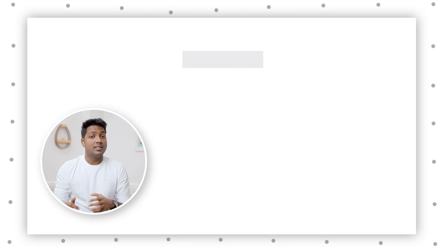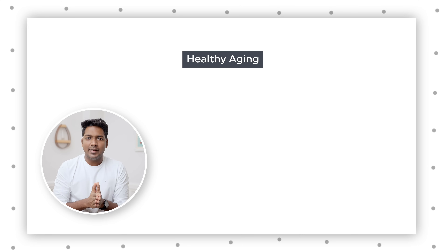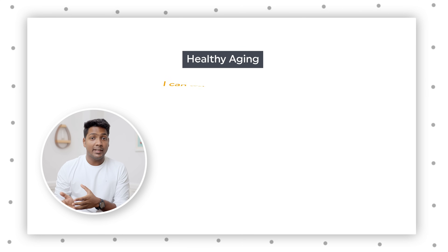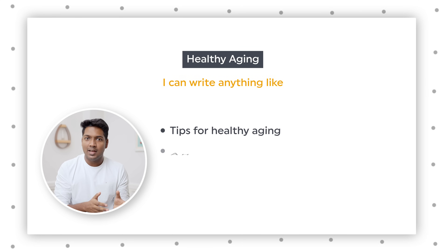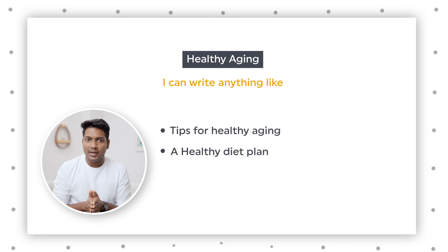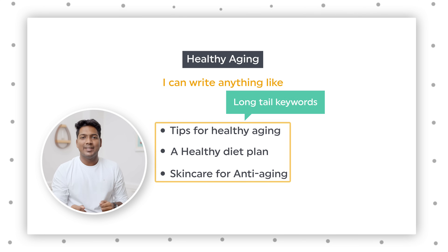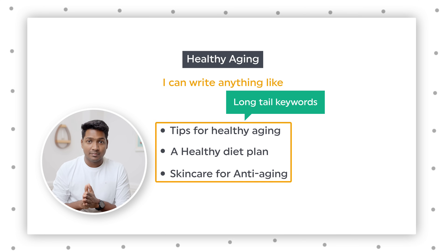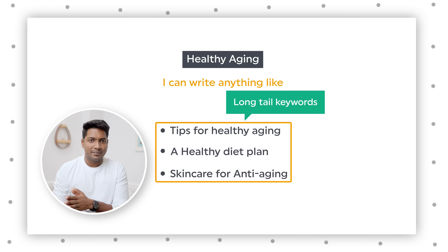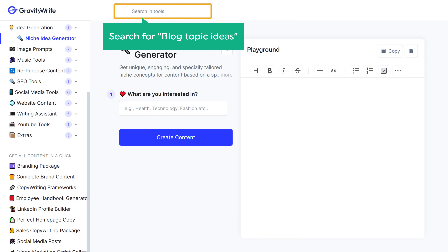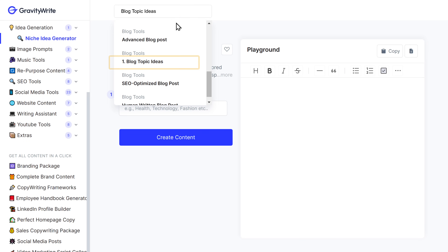Alright, once you have the niche, next let's dive a little deeper and get more specific ideas. For example, since I've chosen healthy aging, I need to decide what I'm going to write content for — or I can write anything like tips for healthy aging, a healthy diet plan, or even skincare for anti-aging. So these are called long-tail keywords and they give a better idea about the topic. So to get keywords like that, there's another tool in GravityWrite. Let's go there — search for 'blog topic ideas' and select it.